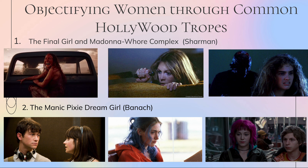A common way female characters are stripped of their agency while still being visually represented is through common Hollywood tropes. The first trope is the final girl in the Madonna-whore complex. This theory states that women are either Madonnas — worthy of men's love but too pure to be desired — or whores who are not worthy of love. This plays into the final girl trope in horror movies, where the last girl alive is almost always the one who abstained from drinking or having sex and is considered the most pure, and that is why she survives.